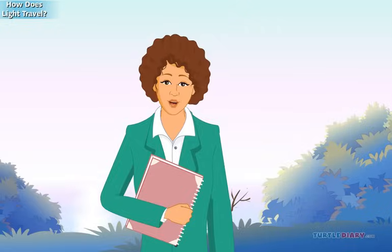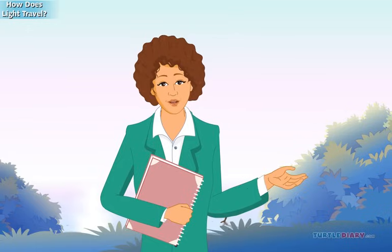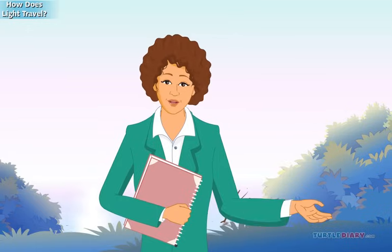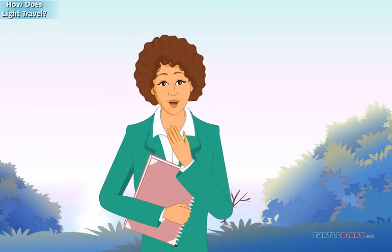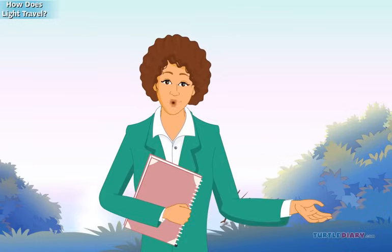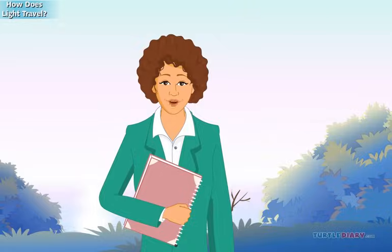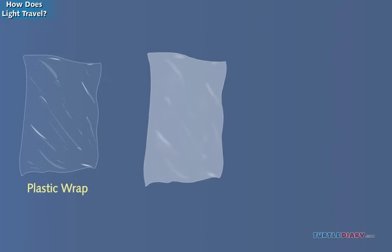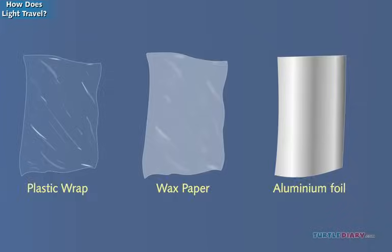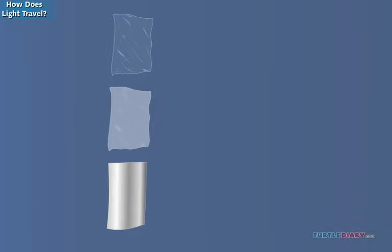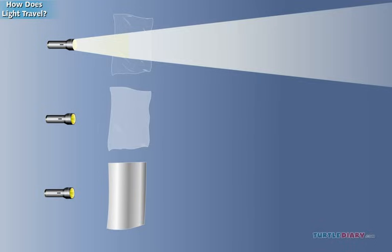Let us now see what are transparent, translucent, and opaque objects. We can observe objects to find out how much light passes through them. Imagine you have in front of you a piece of plastic wrap, a piece of wax paper, and a piece of aluminum foil. If you held them up to the light to see how much light shone through them, what do you think you would find?